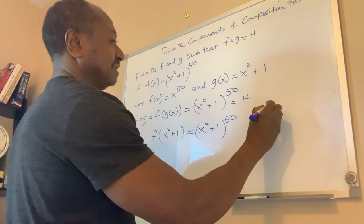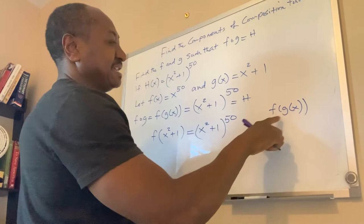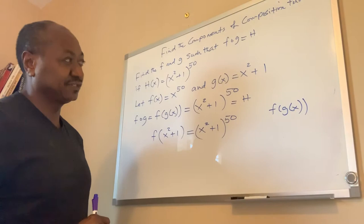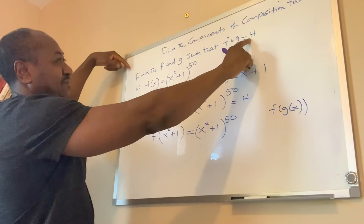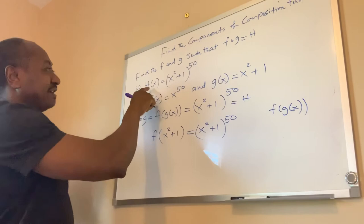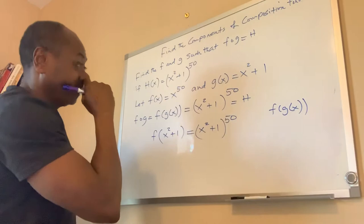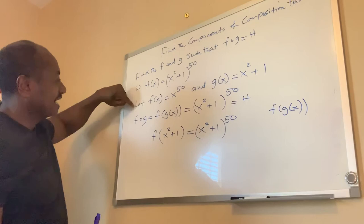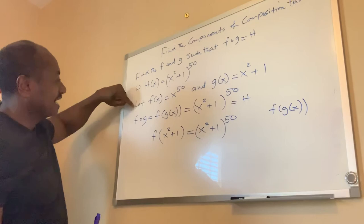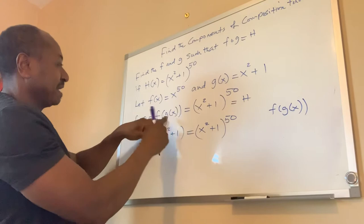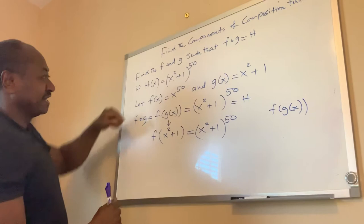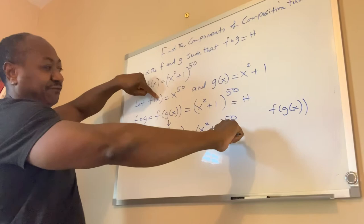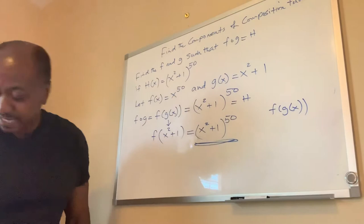Again, finding f of g of x means in the function f I replace x with g of x. Since f of g of x was equal to h and h of x equals x squared plus 1 raised to the power of 50, we assume f of x equals x to the 50 and g of x equals x squared plus 1. Substituting g of x into f gives the composite, which equals h.